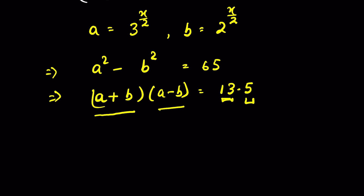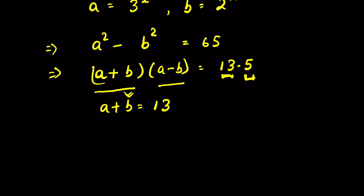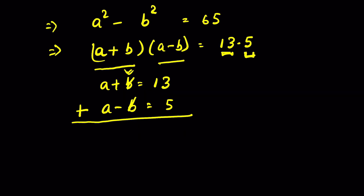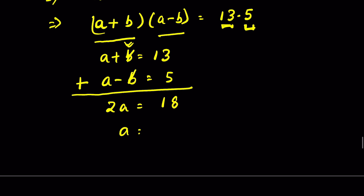That means 13 × 5 = (a + b)(a − b), so a + b must equal 13, since this is the larger positive factor, and a − b equals 5. Now we can find the value of a by adding both equations. The b terms cancel, giving 2a = 18.